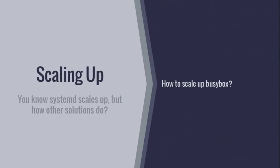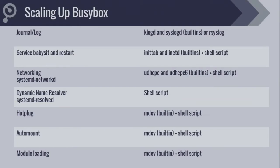Now let's invert the table — you're proposing BusyBox. How does BusyBox scale up? People say 'it's all in there' — journal via klogd and syslogd built into BusyBox, less than one megabyte. You do have some babysitting with crond and inetd, both built-in. But you need shell scripts because alone they won't do anything for you. For networking, systemd ships with systemd-networkd, which is powerful and dynamic — listening for netlink events properly, not just assuming the interface and cable are there.